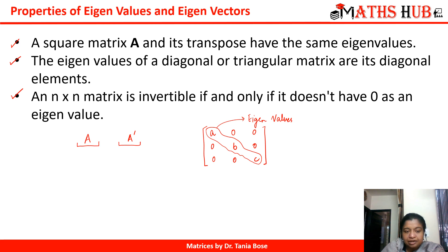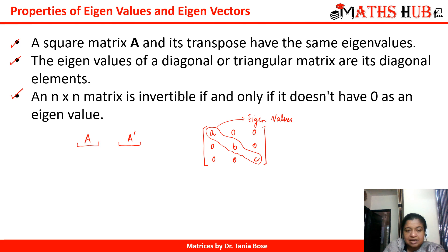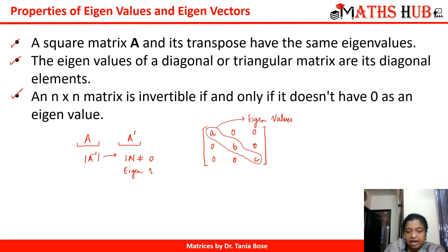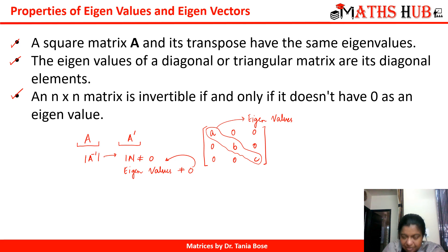The third property: any n×n matrix is invertible if and only if it does not have zero as its eigenvalue. This is a very important property. A matrix is invertible — meaning A inverse exists — only when the determinant of A is not equal to zero. When all eigenvalues are non-zero, the matrix will be invertible. If one of the eigenvalues is zero, the determinant becomes zero and you will not be able to calculate its inverse.